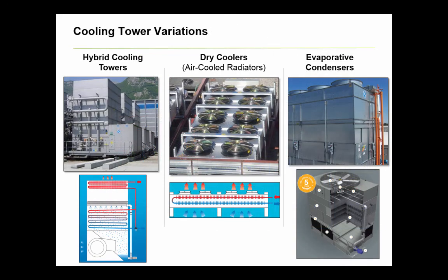Lastly, although not within the detailed scope of this video, it should be mentioned that there are alternative designs that can be used to reject heat to the atmosphere, such as hybrid cooling towers, dry coolers — also known as air-cooled radiators — and evaporative condensers. Each has its application specialty, such as air-cooled radiators being used in regions where water is a more valuable resource than energy, meaning they cost more to operate but use less water. Effectively, each of these variations does the same job as an evaporative cooling tower by doing the final rejection of building heat to the atmosphere.